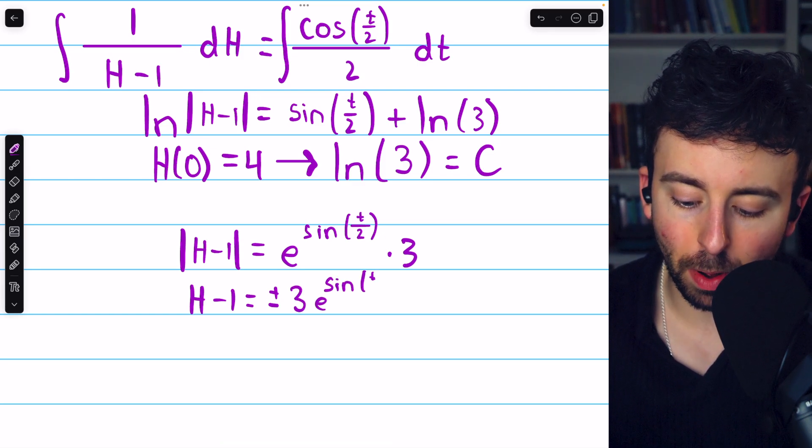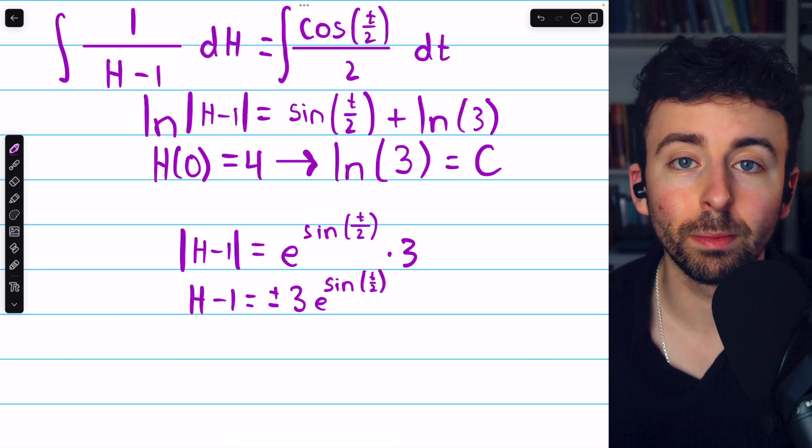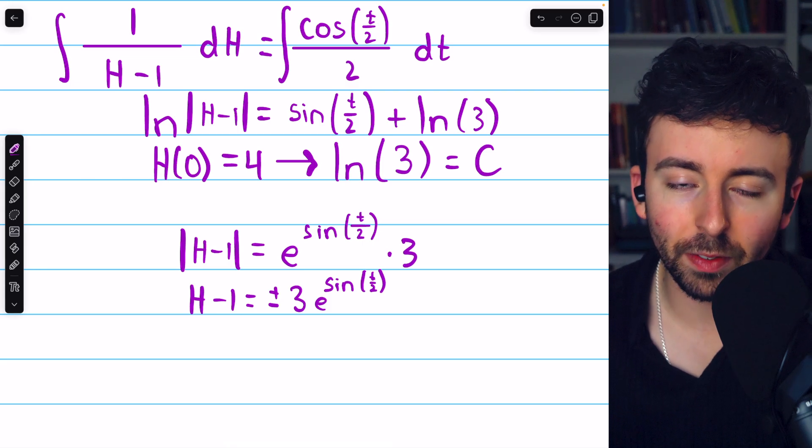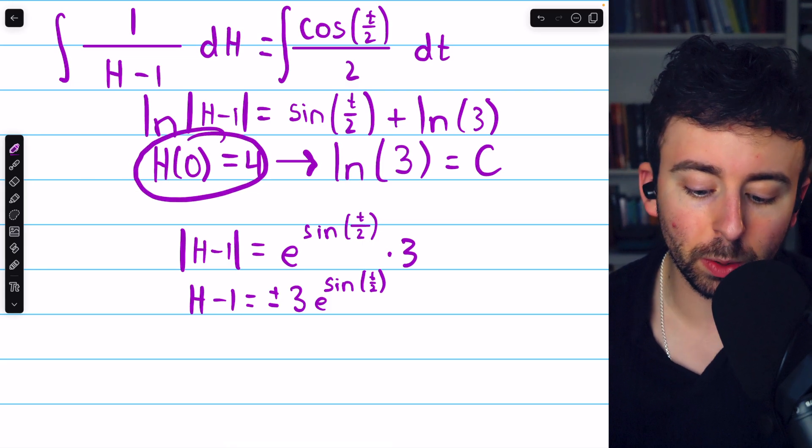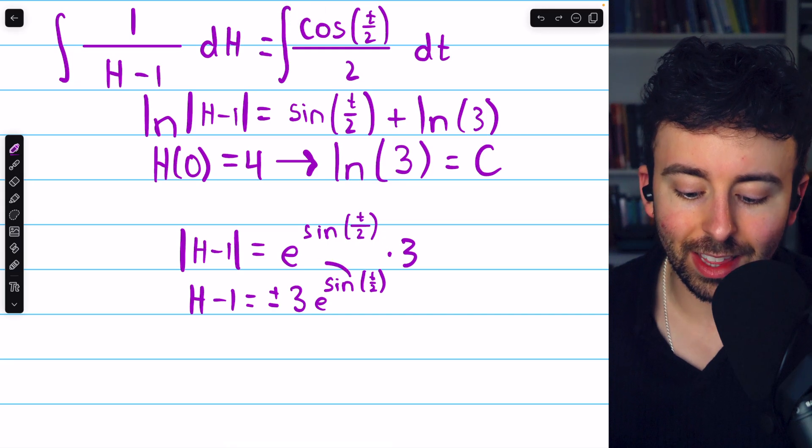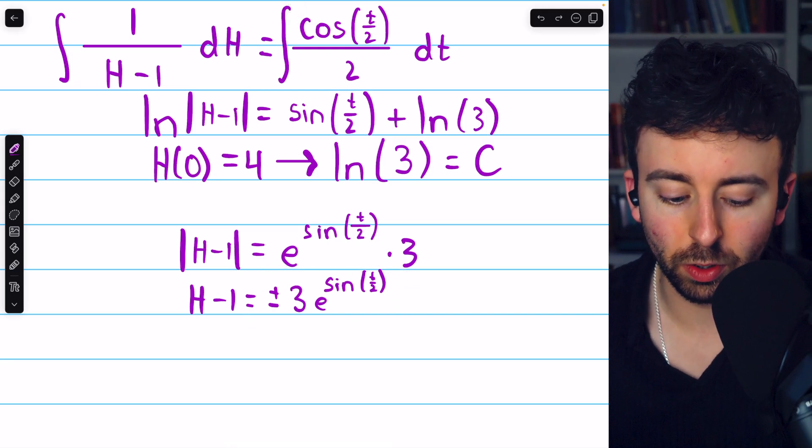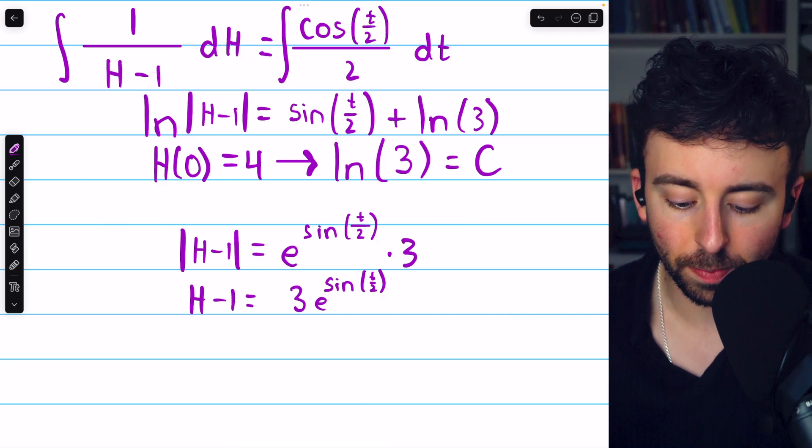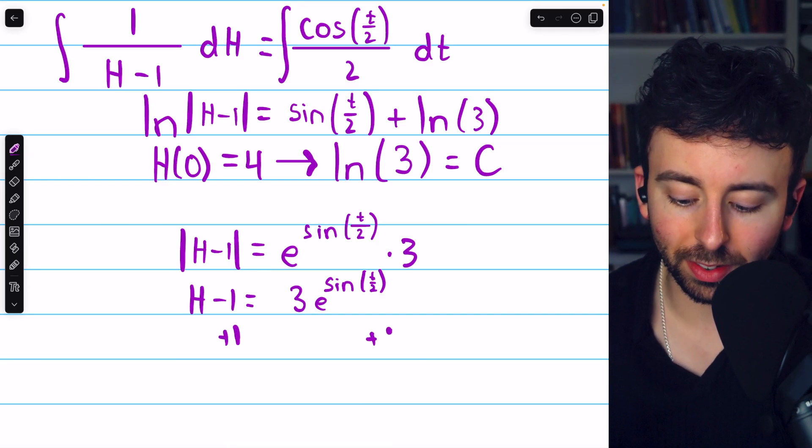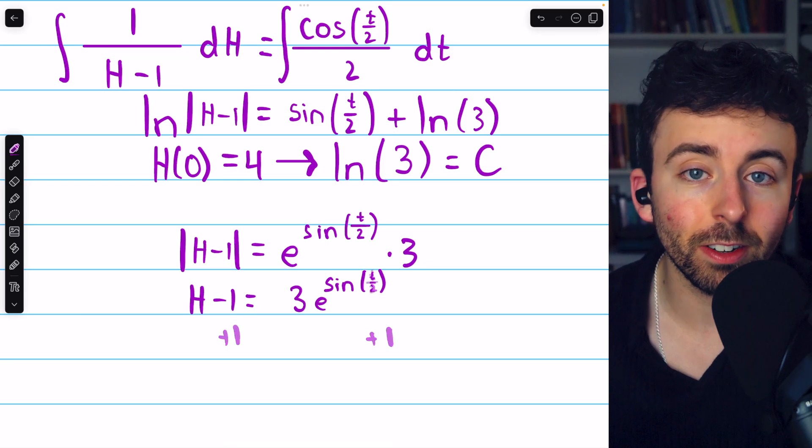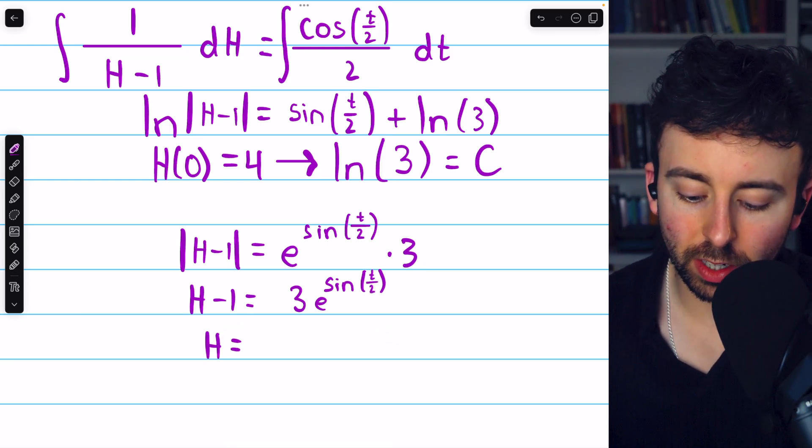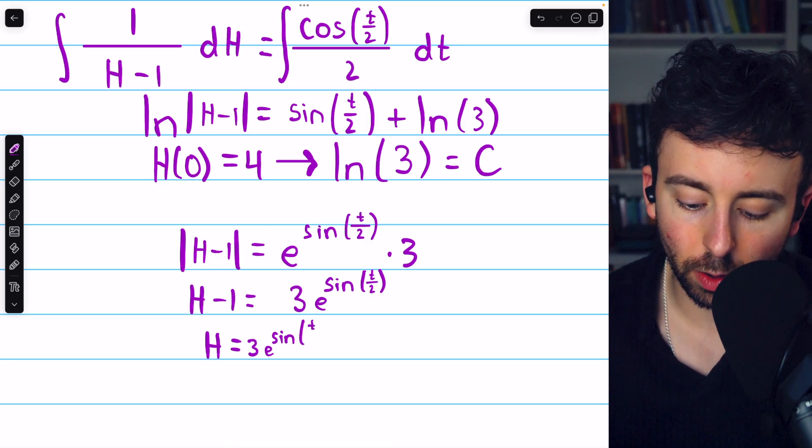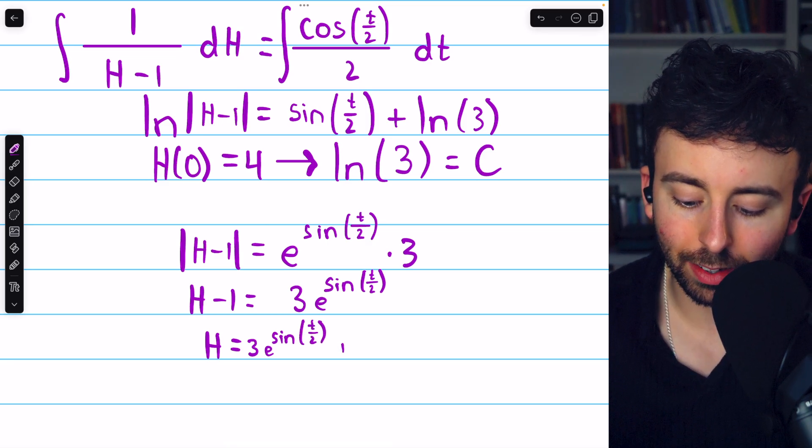So, is it the positive solution or is it the negative solution, plus or minus? Well, we know the initial condition gave us a positive value for h. h(0) equals four. So, in fact, this must be the positive solution. It's not plus or minus. It's just plus for this particular solution. Finally, we can add a one to both sides to finish solving for h. Finally, we have h equals three times e to the sine of (t/2) plus one.